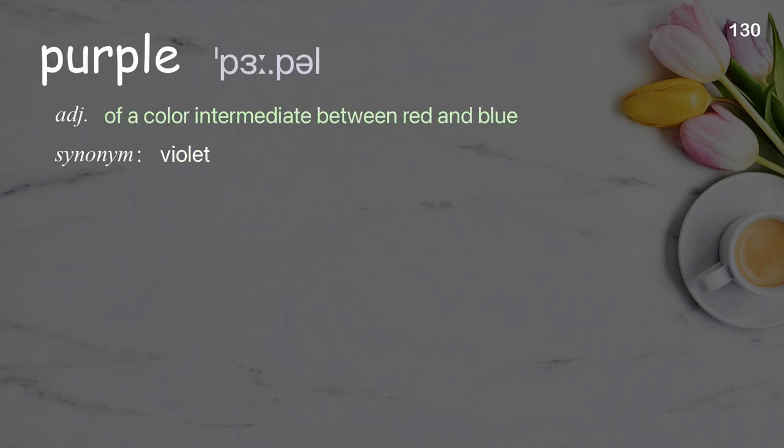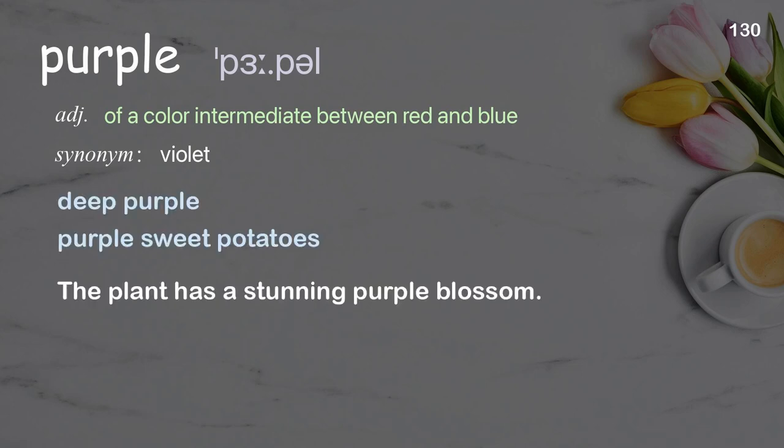Purple: of a color intermediate between red and blue. Examples: deep purple, purple sweet potatoes. The plant has a stunning purple blossom.